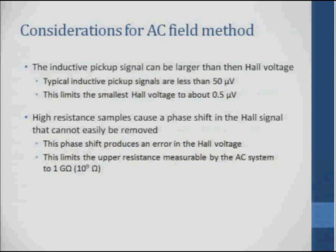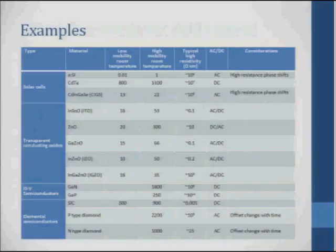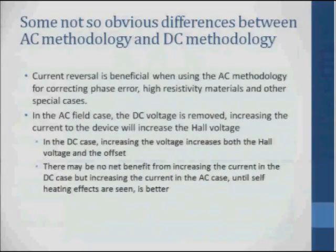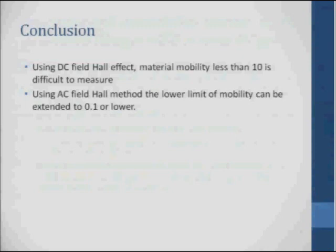In this current design, the practical limit for the Hall voltage is about half a microvolt — the limit we think we can reliably measure. High resistances cause a phase shift that cannot easily be removed; this produces an error in the Hall voltage and limits the resistance of AC systems to something around a gigaohm. We can build a chart of common materials and whether AC or DC is the appropriate method. In conclusion, for materials with mobility less than 10, DC Hall effect is difficult; the AC Hall method can extend this down to 0.1 or lower.